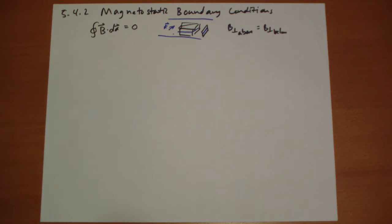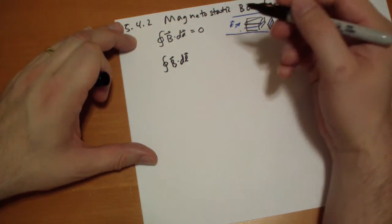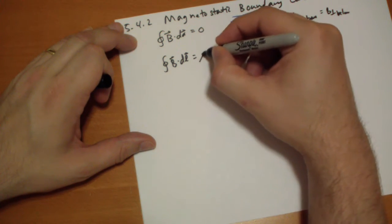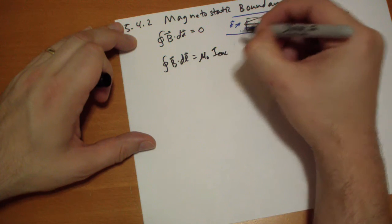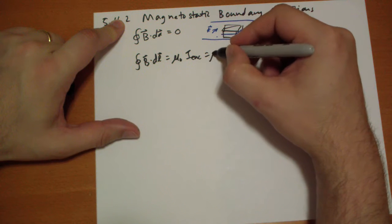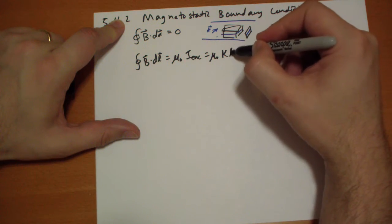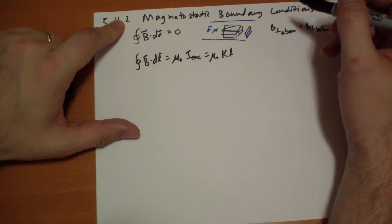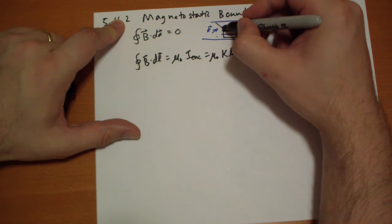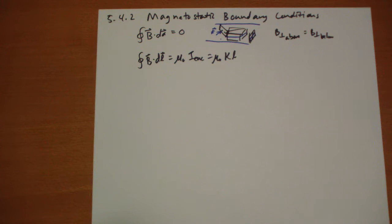So Ampere's law says that the integral of B vector dot dL over a closed loop is going to be equal to mu-naught times the current enclosed, which is going to be mu-naught times the surface current times the length. I should have drawn this perpendicular, so ignore this box. This is drawn perpendicular. So we're going perpendicular to the current there.